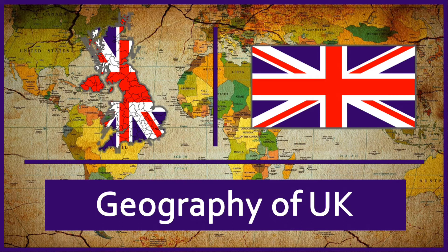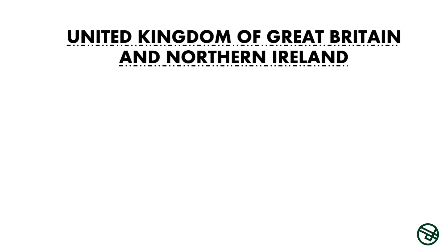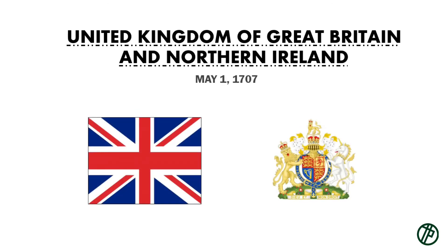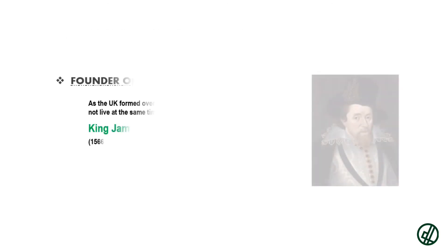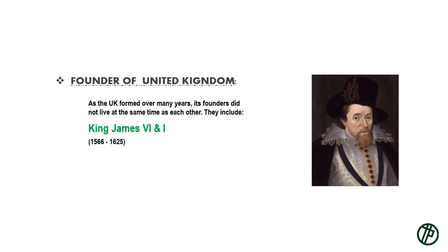Geography of UK. Introduction. The United Kingdom of Great Britain and Northern Ireland was formed on May 1st, 1707. As the UK formed over many years, its founders did not live at the same time as each other. They include King James 6 and 1.